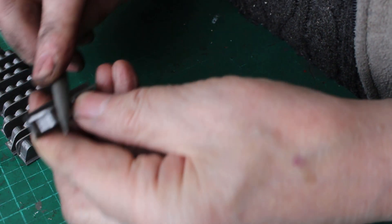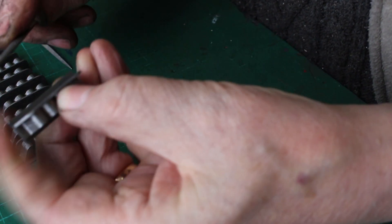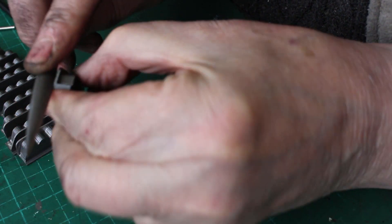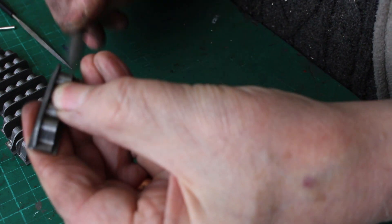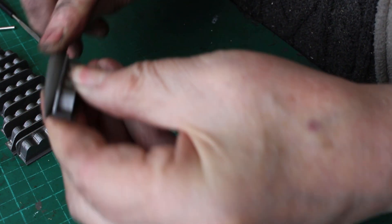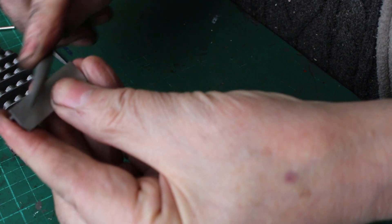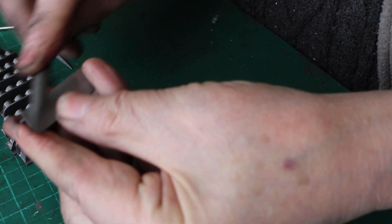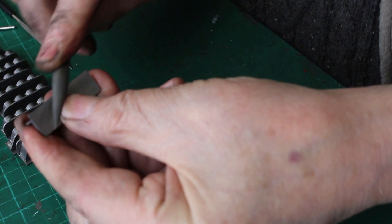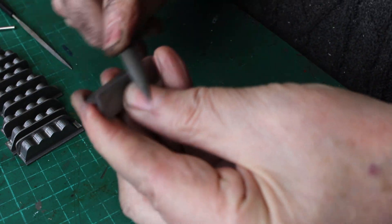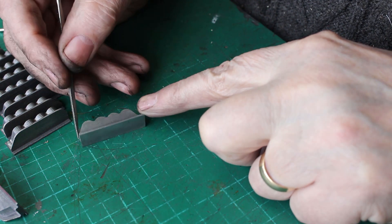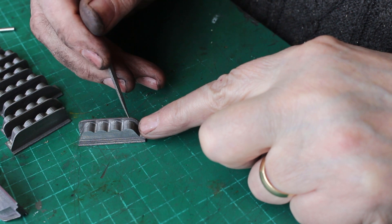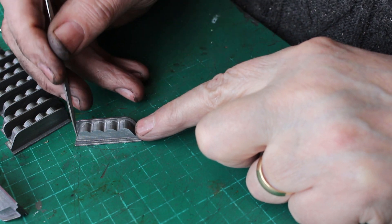So it's just a case of giving these a little file up, take the sharp edges off. So I've made them with one flange on one side. Obviously it should have a flange on the other side as well.